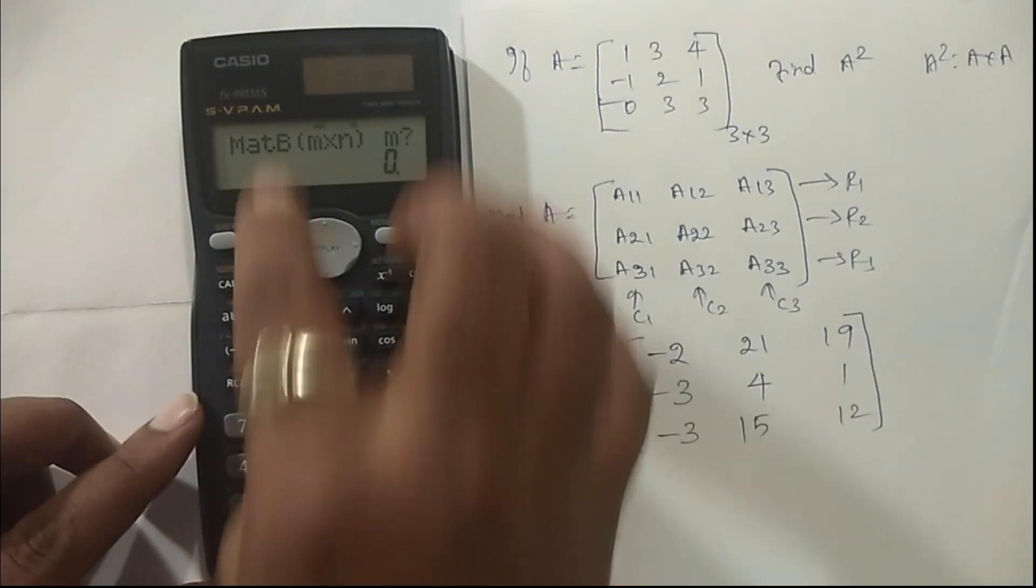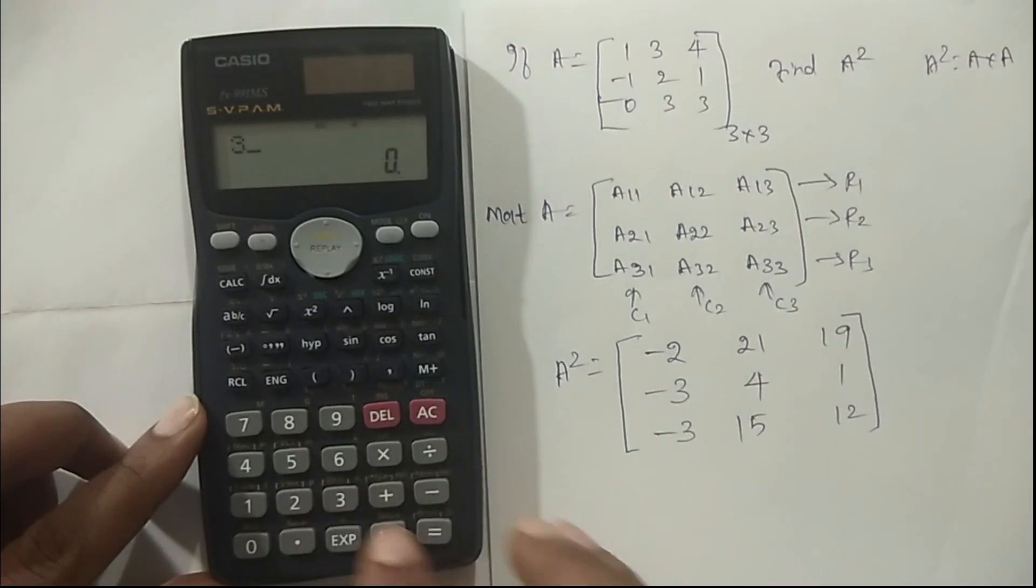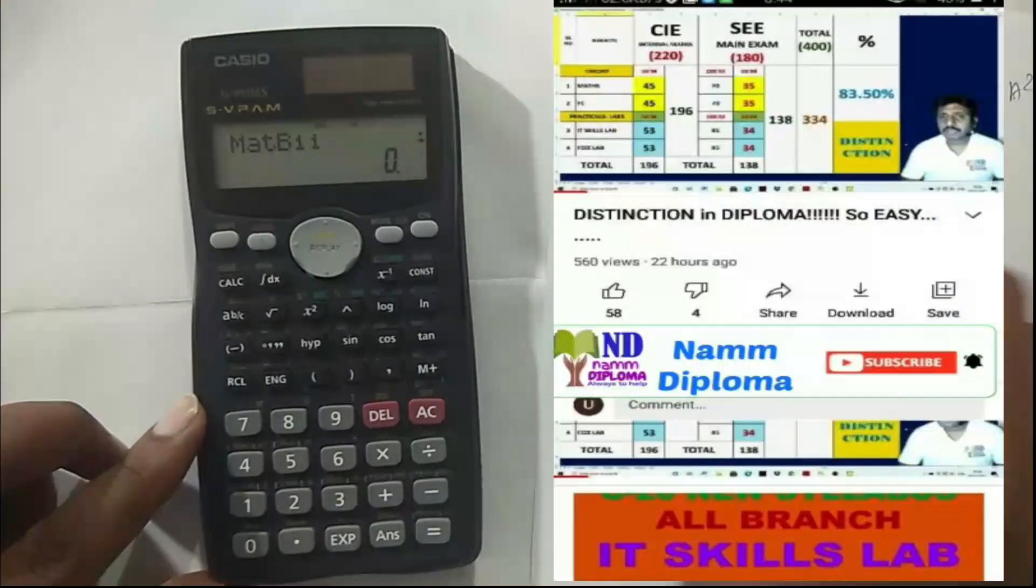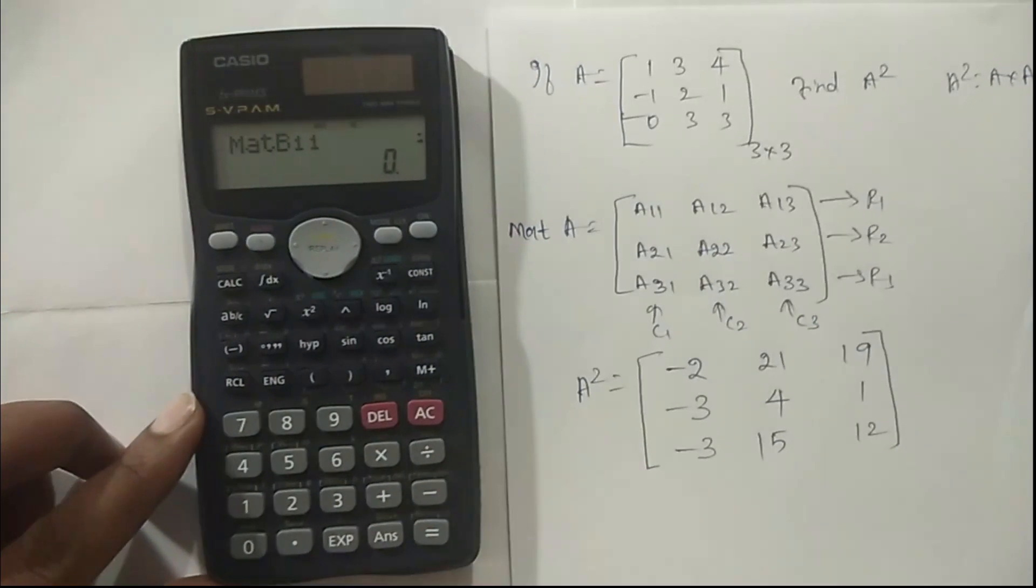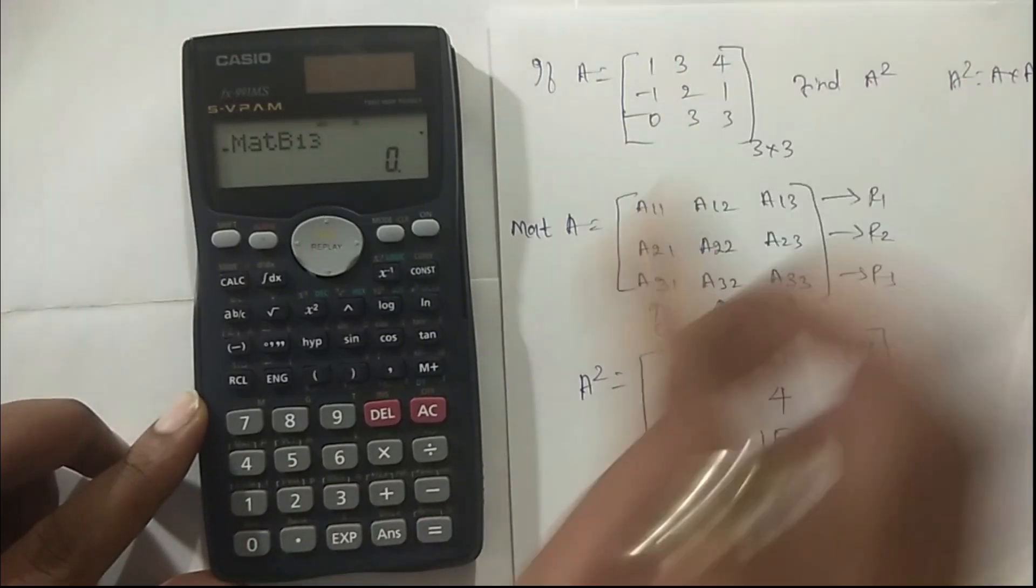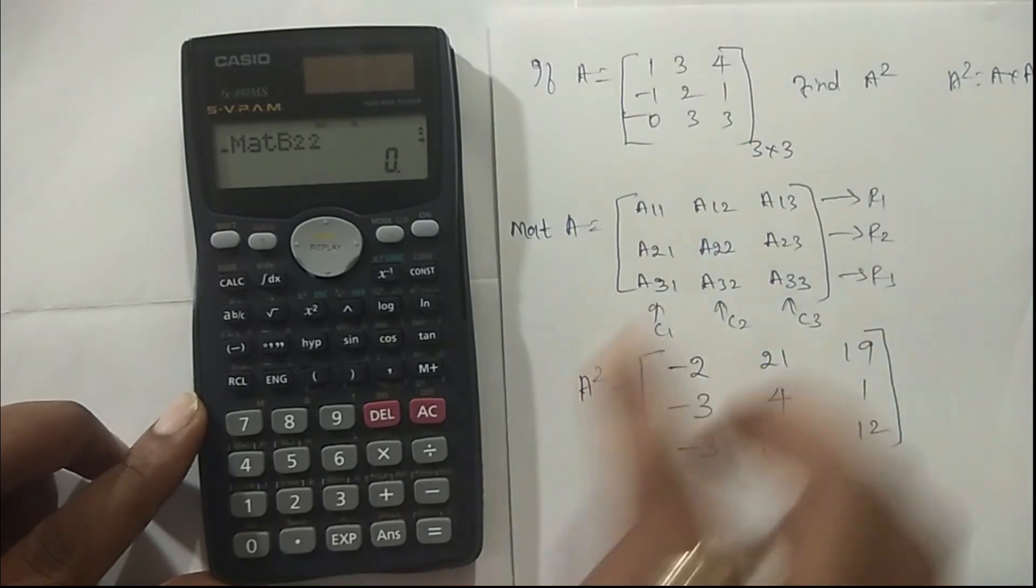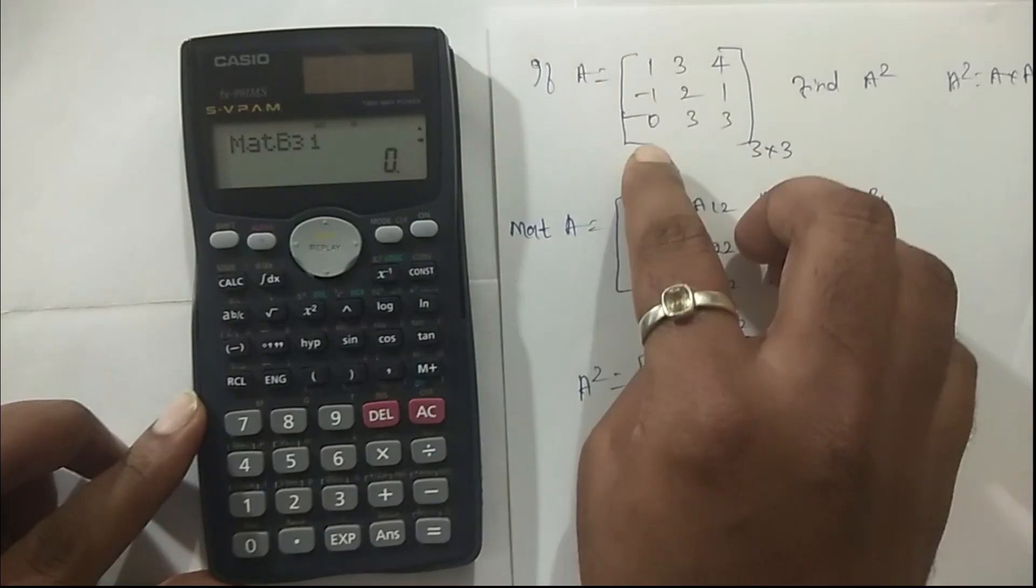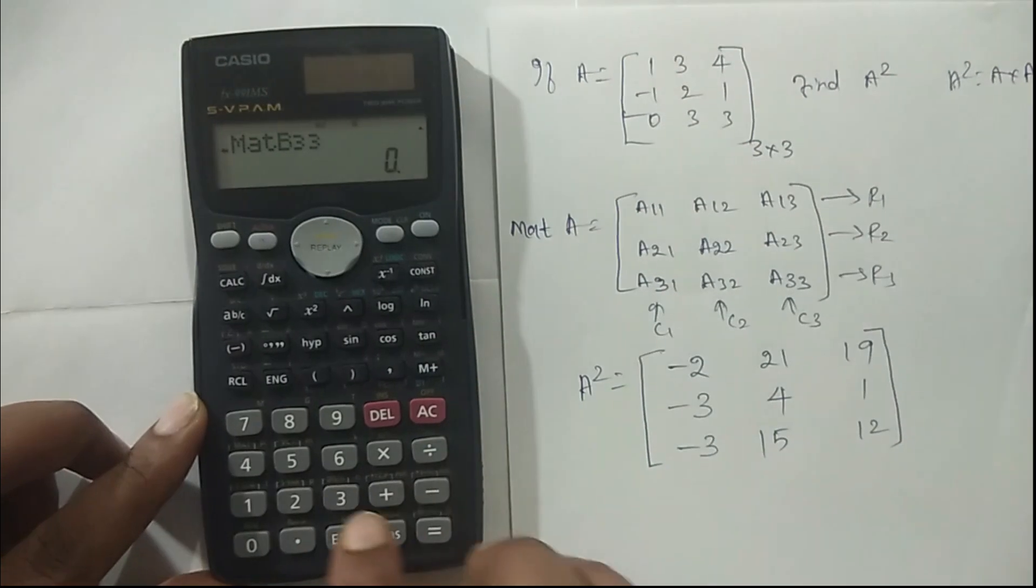Shift 4, select dimensions 1, then select matrix B by pressing 2. Same order again - same row and column, so give row as 3 and column as 3. Enter the same values. B11 is 1, B12 is 3, B13 is 4. B21 is minus 1, B22 is 2, B23 is 1. Similarly, B31 is 0, B32 is 3, and B33 is 3.